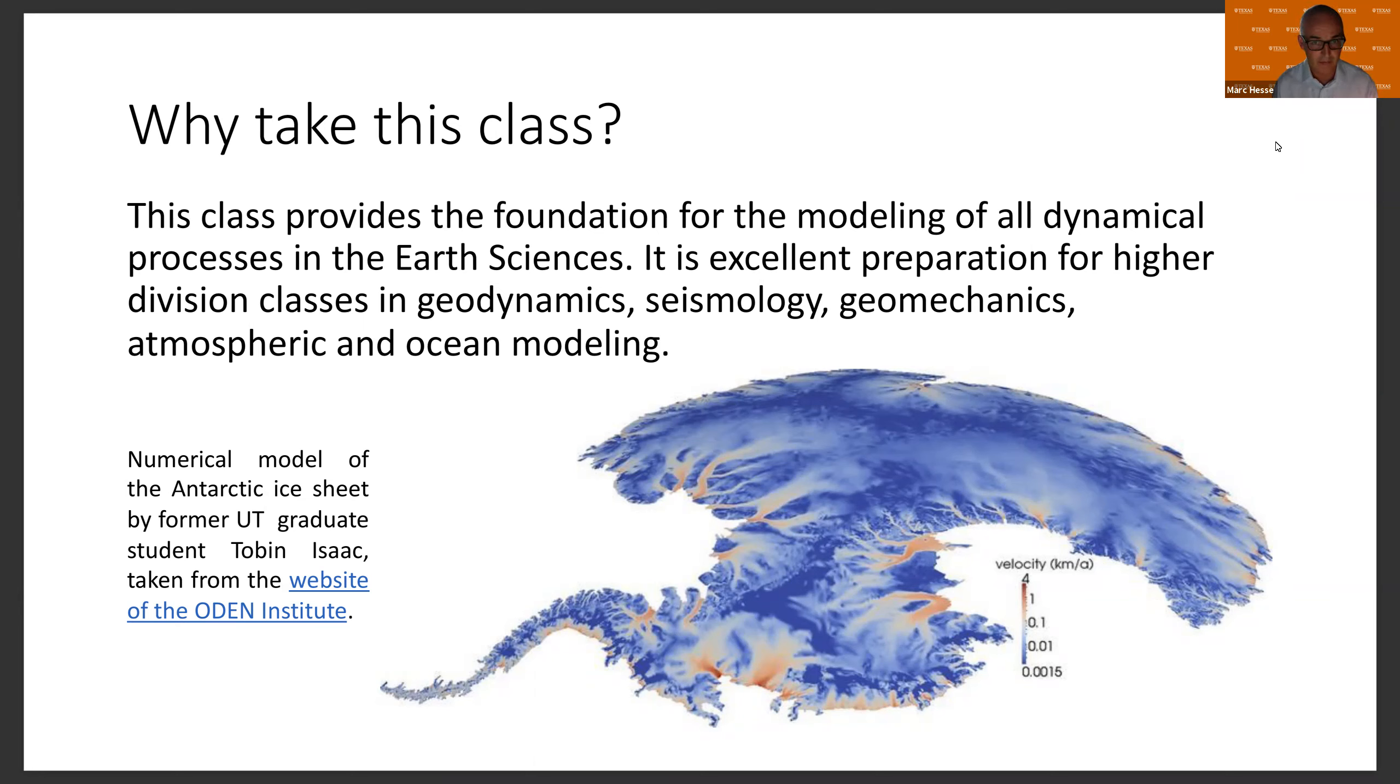On the bottom here is a very nice example of a recent student from the Odin Institute, where he modeled the entire Antarctic ice sheet. And one of the results of the studies, you can see that the ice flow is localized into these ice streams, which show up in red here, which is where most of the ice loss is then concentrated.